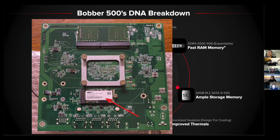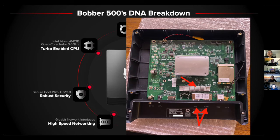For networking, you want gigabit ports. If you use switches or cabling, make sure they can handle gigabit speeds. The previous standard was 10/100 — up to 100 Mbps — and if you use a 10/100 switch anywhere in your setup, you won't pass the speed test since 100 Mbps down is the requirement, and 10/100 equipment will only theoretically hit 90-95 Mbps at best. The Bobber 500's WAN and eNB ports are both gigabit.